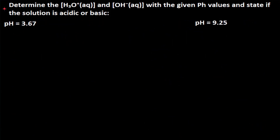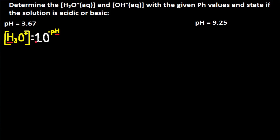Determine the H3O+ concentration and OH- concentration with the given pH values and state if the solution is acidic or basic. For pH = 3.67, we get H3O+ because H3O+ equals 10 to the power of negative pH. 10 to the negative 3.67 gives 2.1×10⁻⁴ moles per liter. For pH and pOH, the sig digs only apply to the decimal numbers, so we have two sig digs, meaning H3O+ has two sig digs.